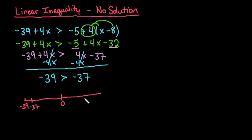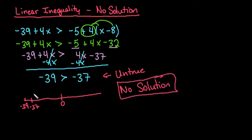It's never going to be to the right of that. So since this is an untrue statement, or a false statement, we would say that there is no real solution. Or there is no solution to this equation. As far as the graph goes, you would just leave an empty number line like this. You can't shade anything because there is no solution.